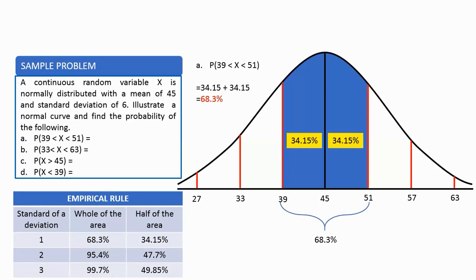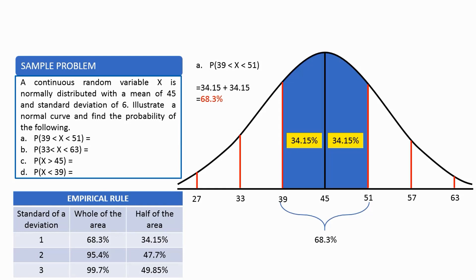On the positive values — the right side of the graph — we add the mean and the standard deviation: 45 plus 6 equals 51, then 51 plus 6 equals 57, then 57 plus 6 equals 63. The area we are looking for is from 39 up to 51. Both are one standard deviation away from the mean of 45. According to the empirical rule, one standard deviation away from the mean has an area of 34.15%. Since both sides are one standard deviation from the mean, summing both gives 68.3%.